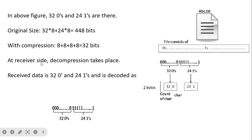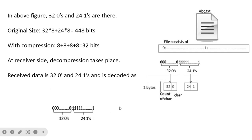Since this is a lossless compression technique, at the receiver side decompression takes place. The receiver gets the information as 32 zeros and 24 ones. During decompression it replicates zero 32 times and then replicates one 24 times, and we get exactly the original data — that is why it is a lossless compression technique.